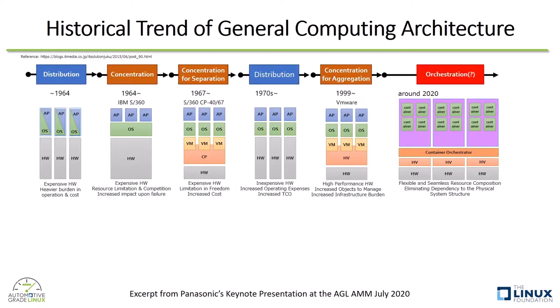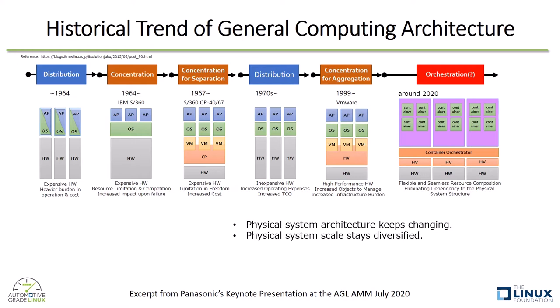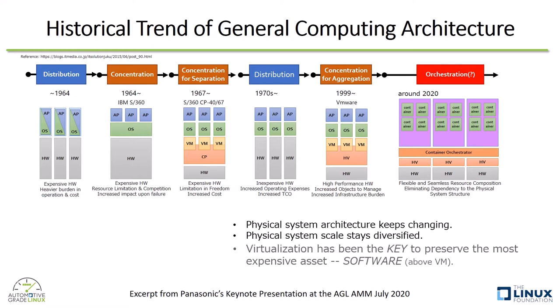This slide shows a similar concept, but focusing more on processed hardware and software. Physical architecture also keeps changing, and the physical system scale stays diversified even in the same architecture. In such a variable situation, virtualization has been constantly the key technology to preserve our most expensive asset — that is, of course, software.